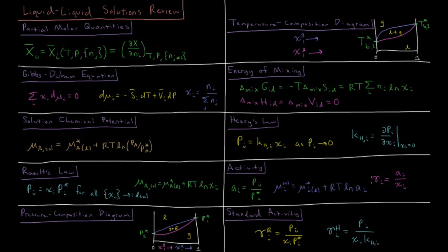We can define the activity coefficient gamma as the activity divided by the mole fraction of a given substance. For an ideal solution, the activity coefficient for all components equals one, since activity and mole fraction are equal. We can define two different standard states for activity: one based on Raoult's law and one based on Henry's law.